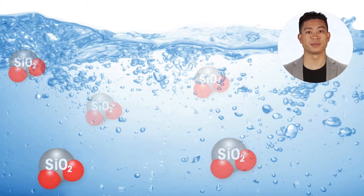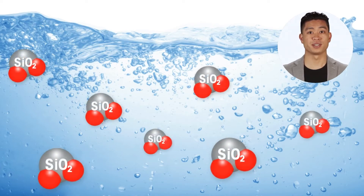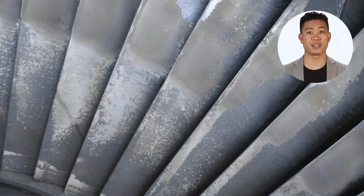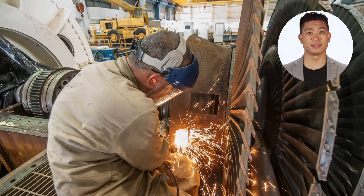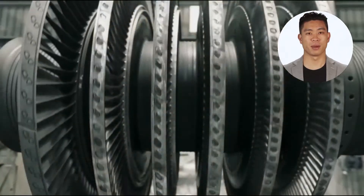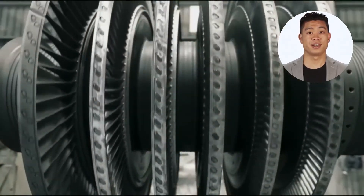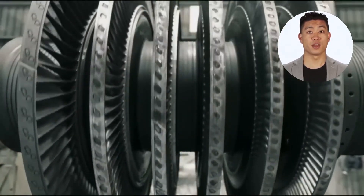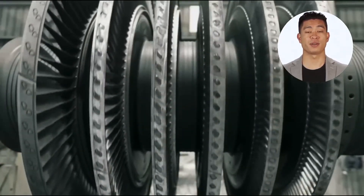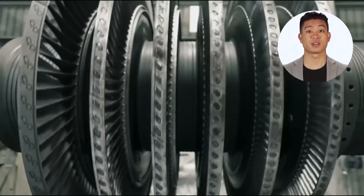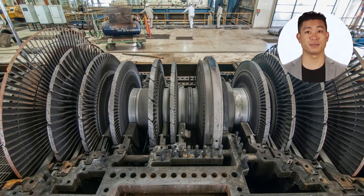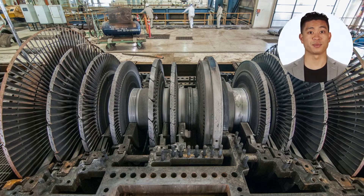In the water-steam cycle, silica volatilizes with steam and deposits on the turbine in a form that can only be effectively removed through mechanical means, requiring significant downtime. In the turbine, even a modest thickness of silicate reduces capacity, lowers efficiency, and can cause imbalance. In the worst cases, silica buildup can cause vibration that can ultimately result in an unplanned shutdown.